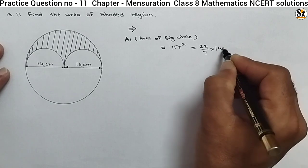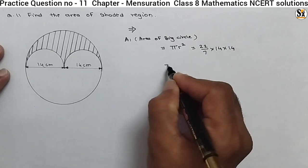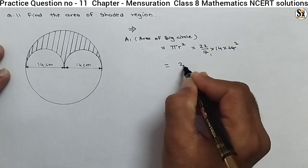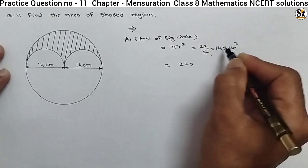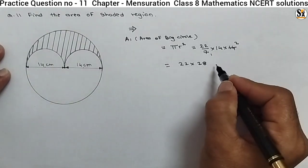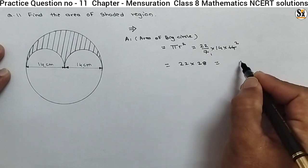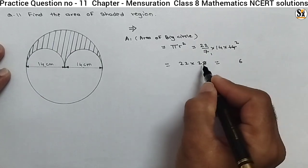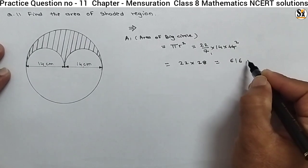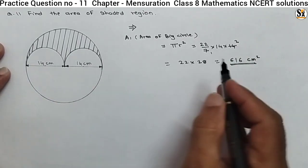So 14 squared means 14 into 14. Here 7 in the denominator cancels with 7 from 14. So we get 22 into 14 into 2, that is 22 into 28. 28 into 2 is 56, carry 5, then 28 into 2 is 56 plus 5, that is 61. So the area A1 is 616 centimeter squared.